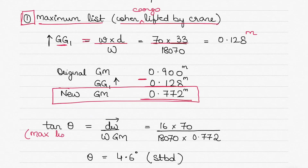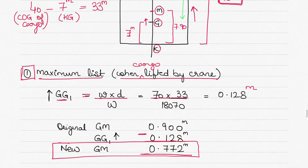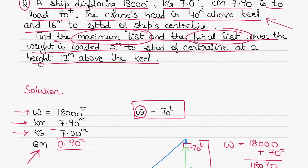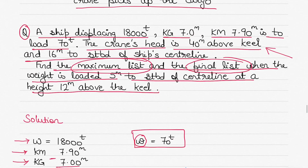Now we find the maximum list, which occurs when the cargo is lifted by the crane. The formula for list is: tan θ = (transverse movement of cargo × w) ÷ (displacement × GM).